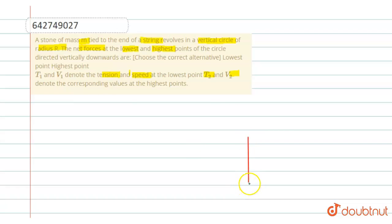Here is a stone of mass m tied to the end of the string, and it revolves in a vertical circle of radius r, like we assume.